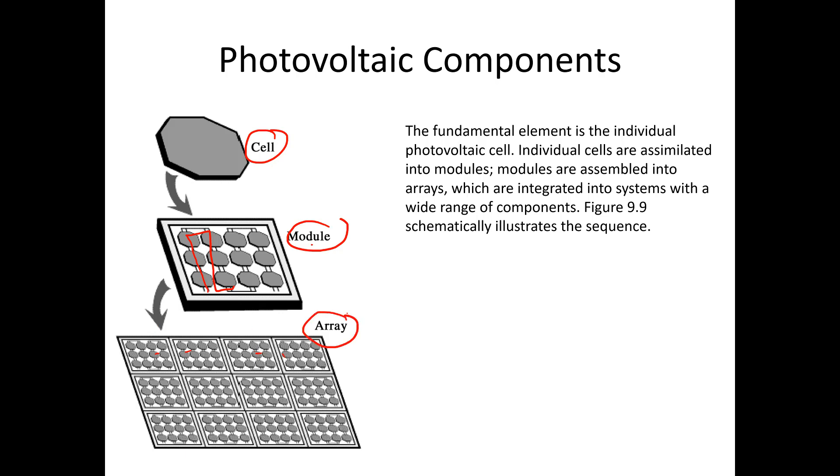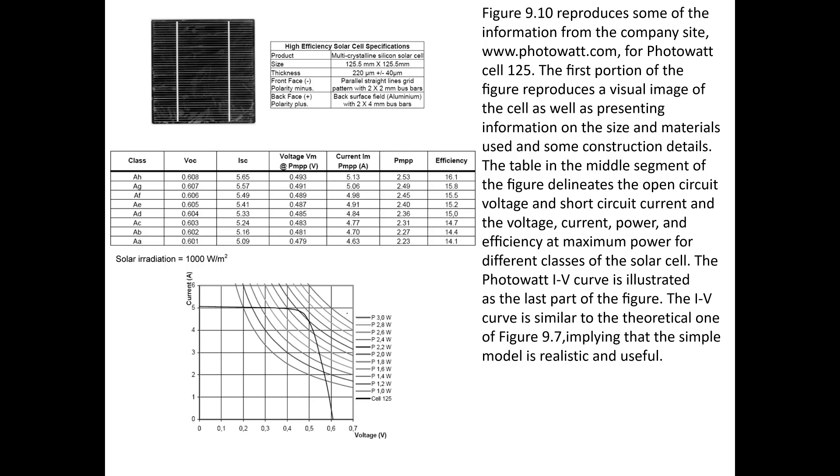This figure was reproduced from your book, and it reproduces some of the information from a company site from Photowatt. For this particular cell, which is a Photowatt cell 125, the first portion of the figure produces a visual image of the cell, as well as presenting information on the size and materials used in some construction details.